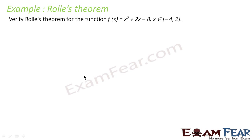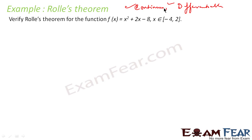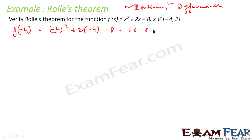Let's take some examples. The first example: verify Rolle's Theorem for f(x) = x² + 2x − 8 on [−4, 2]. We know this is a polynomial function, so it is continuous and therefore differentiable also. The first two conditions are satisfied. For the third condition, let's find f(−4): (−4)² + 2(−4) − 8 = 16 − 8 − 8 = 0.